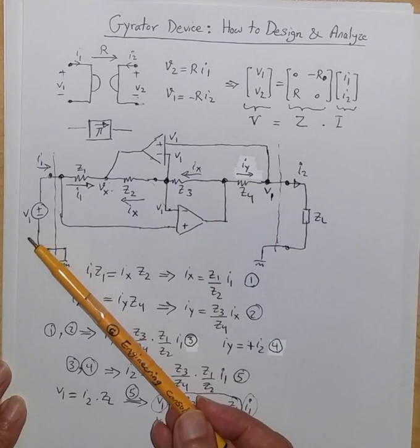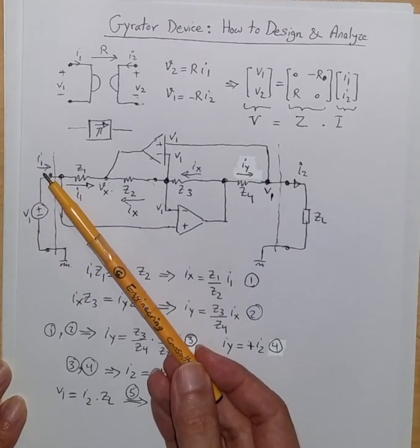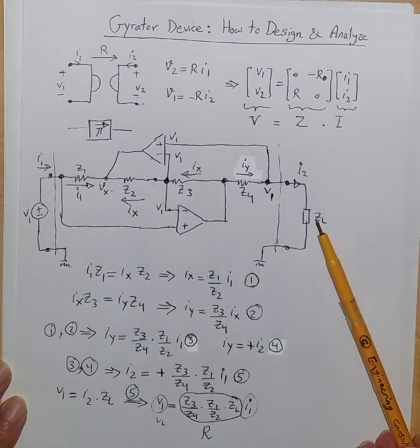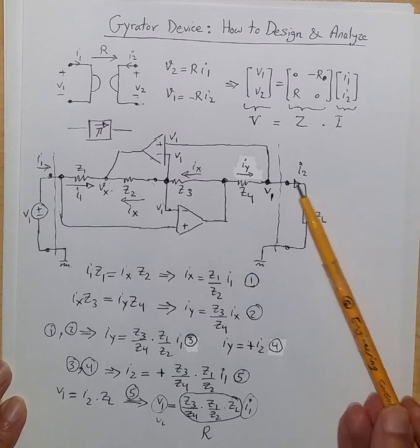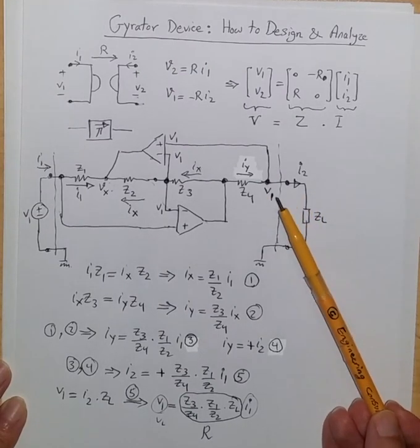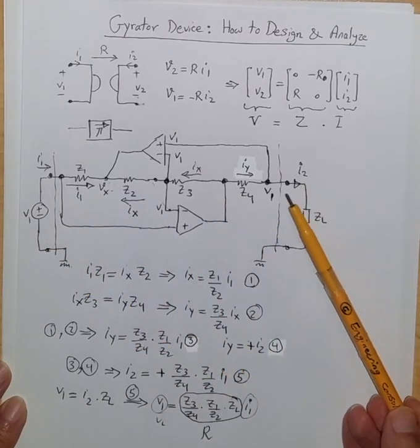Assume that you apply voltage V1 at the input terminal resulting in a current I1 going to the two port device and then you have a load ZL connected to the second port and the current I2 is coming out and you want to find that relationship between the voltage V1 and current I2 and so on.